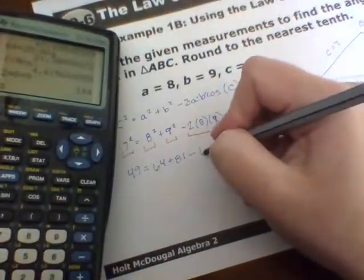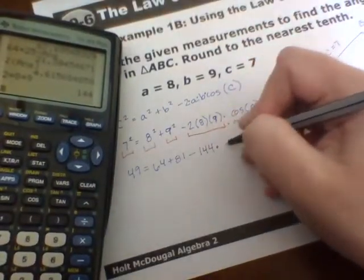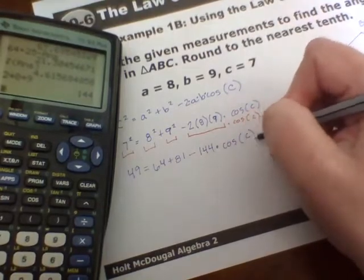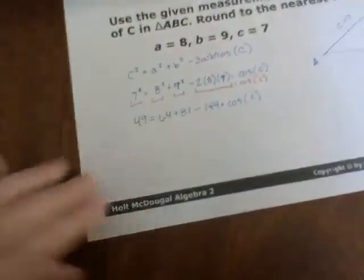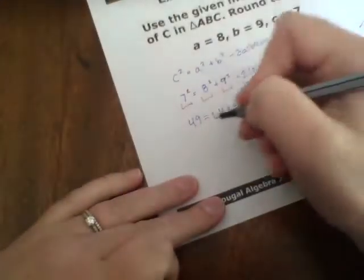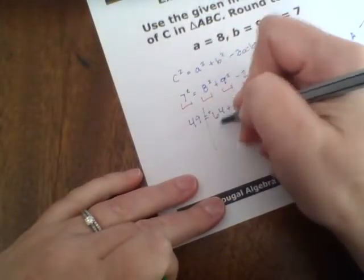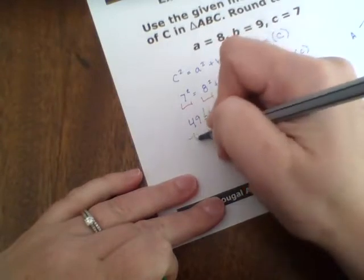So we have 49 equals 64 plus 81, and then to that we're going to subtract 2 times 9 times 8, or 2 times 8 times 9. So we have 144 that's being multiplied by cosine of C.